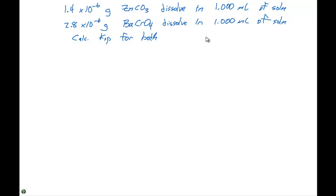In order to calculate the Ksp, we're going to form these saturated solutions. The first thing I want to do in every case — the first thing I see when thinking these problems through — is an equilibrium expression. So the equilibrium expression we're going to write first is for zinc carbonate, ZnCO₃. It's going to be in equilibrium with zinc two plus ions plus CO₃ two minus ions.